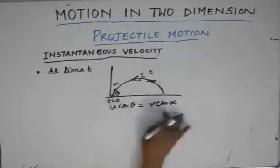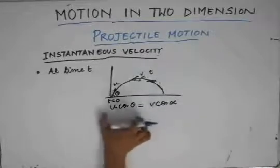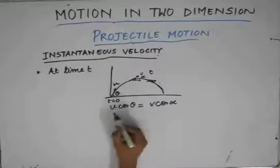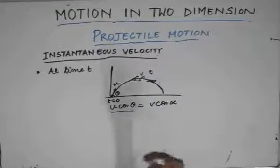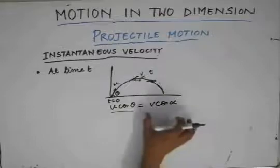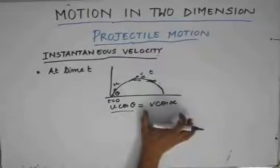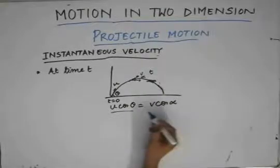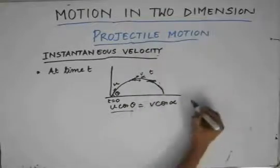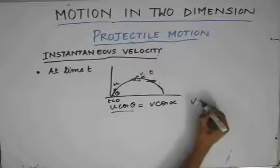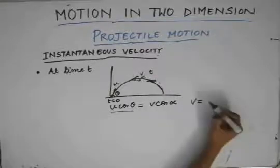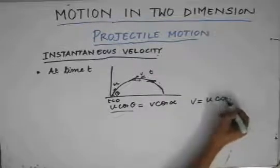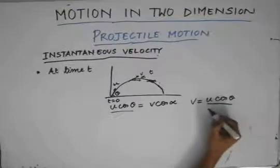Since there is no acceleration in the horizontal direction, u cos θ must equal v cos α — the horizontal velocity at time t. From this we can find the velocity at any instant of time t as v = u cos θ / cos α.